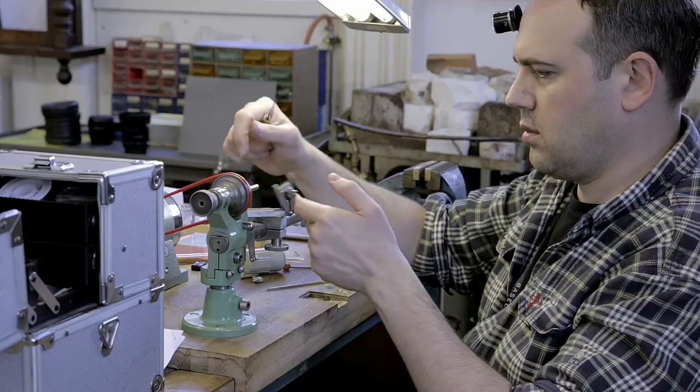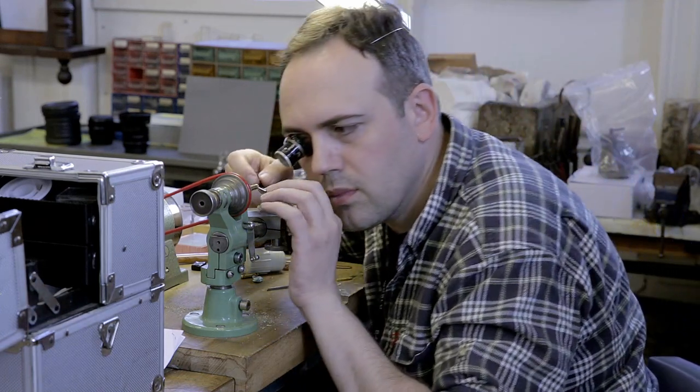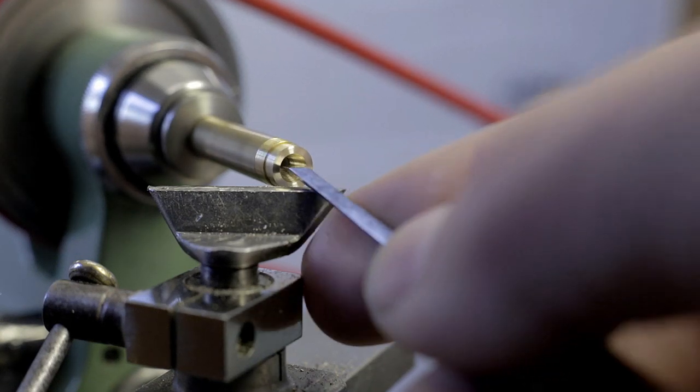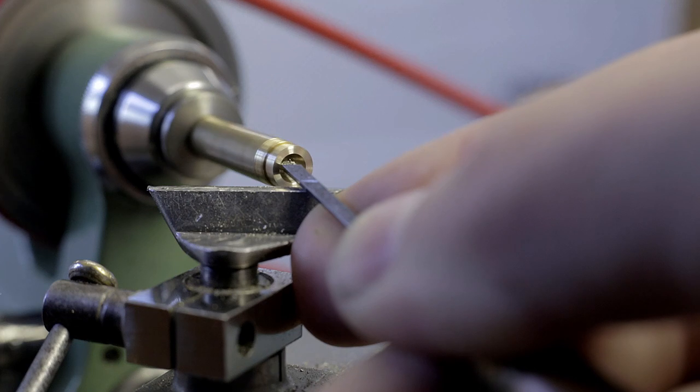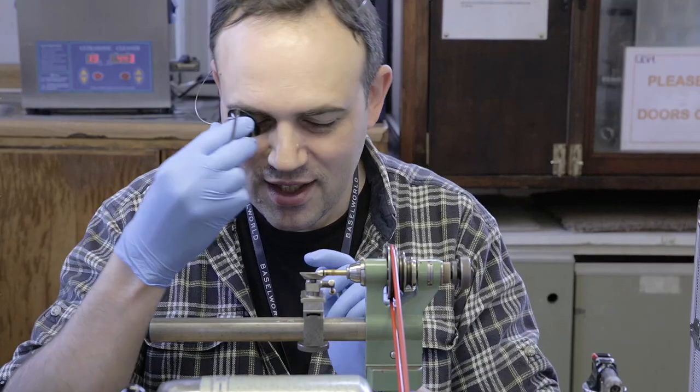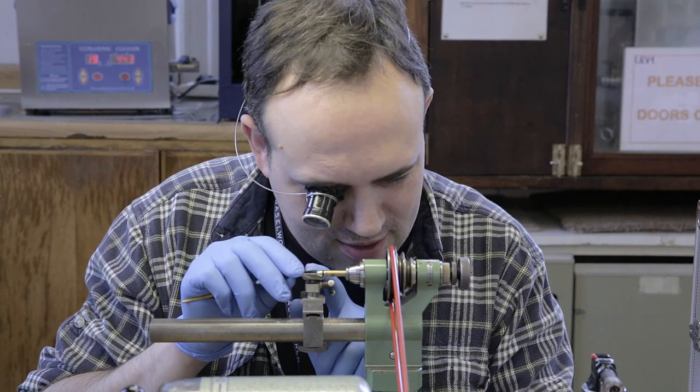The skills a horologist needs include patience, bags of patience, lots of discipline and dedication, the ability to just keep on persevering, repeating the same task over and over, trying and trying, being prepared to discard your work and start over until it's absolutely perfect.